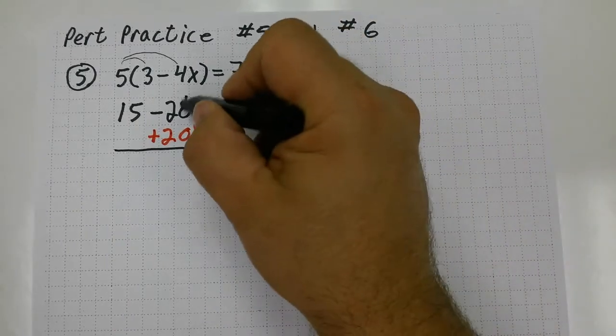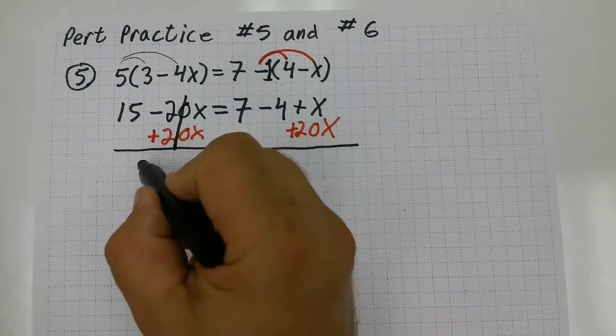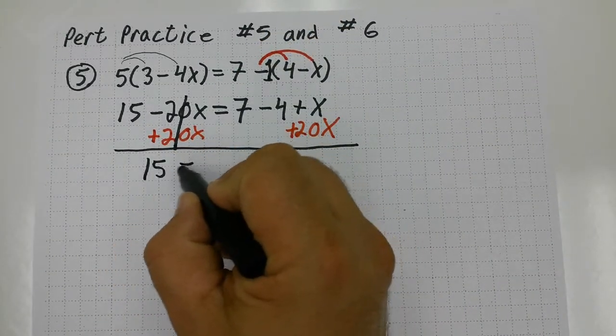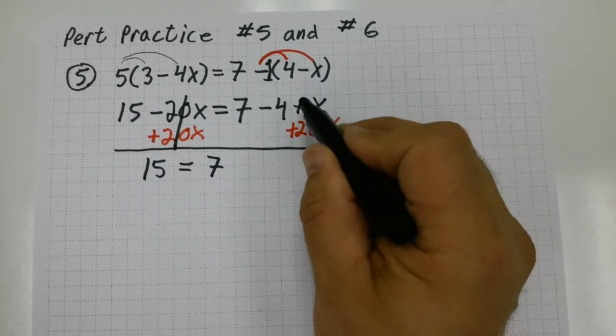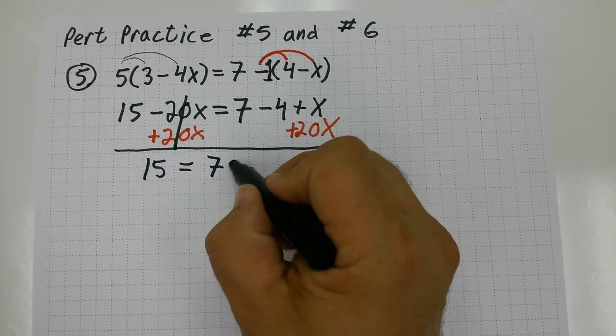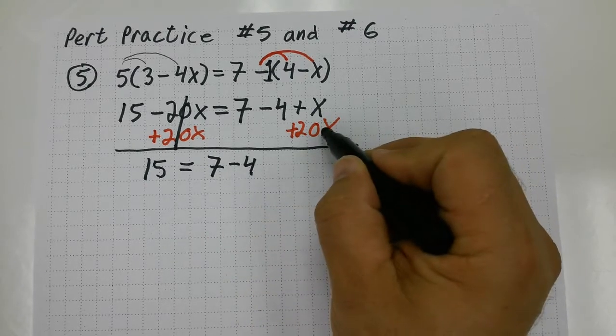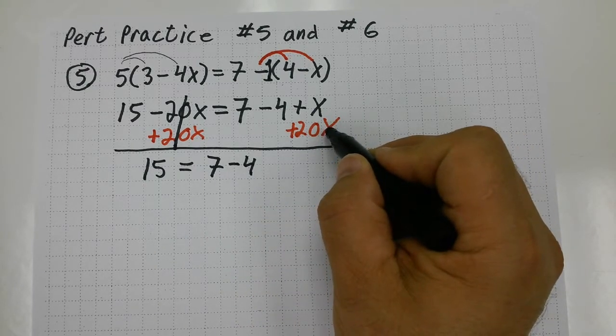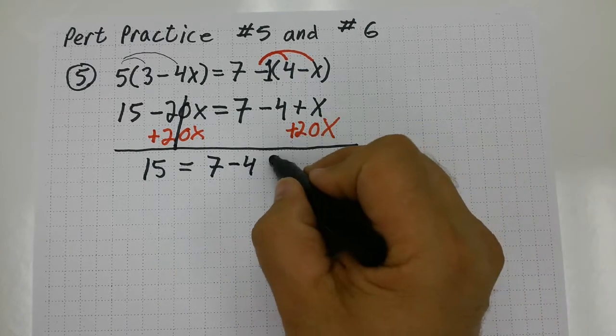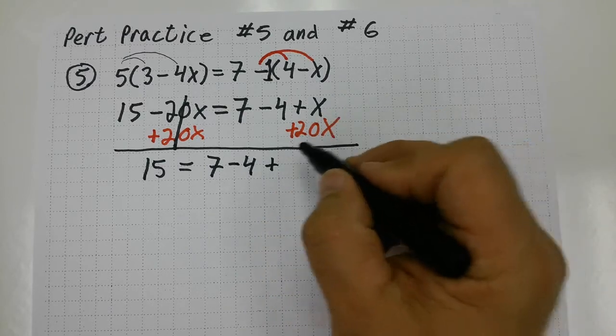These are going to simplify or cancel out. The 15 falls down, equals just the 7, and 7 minus 4. And 20x plus x, well that's going to give me plus 21x.